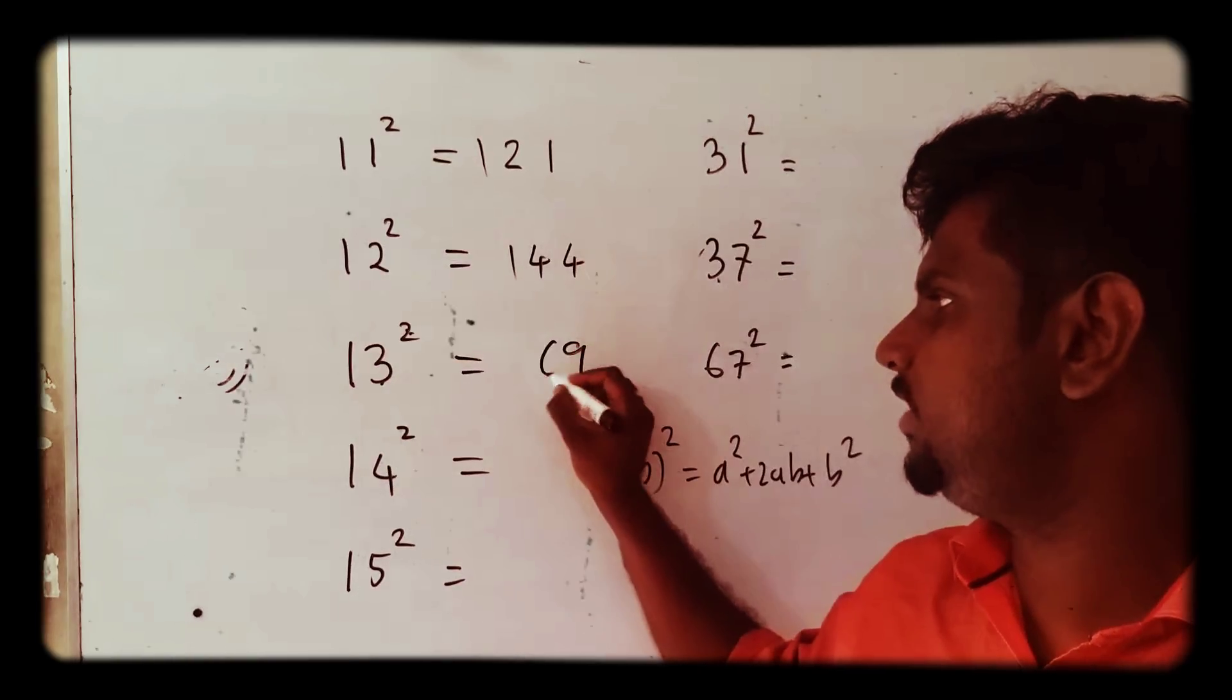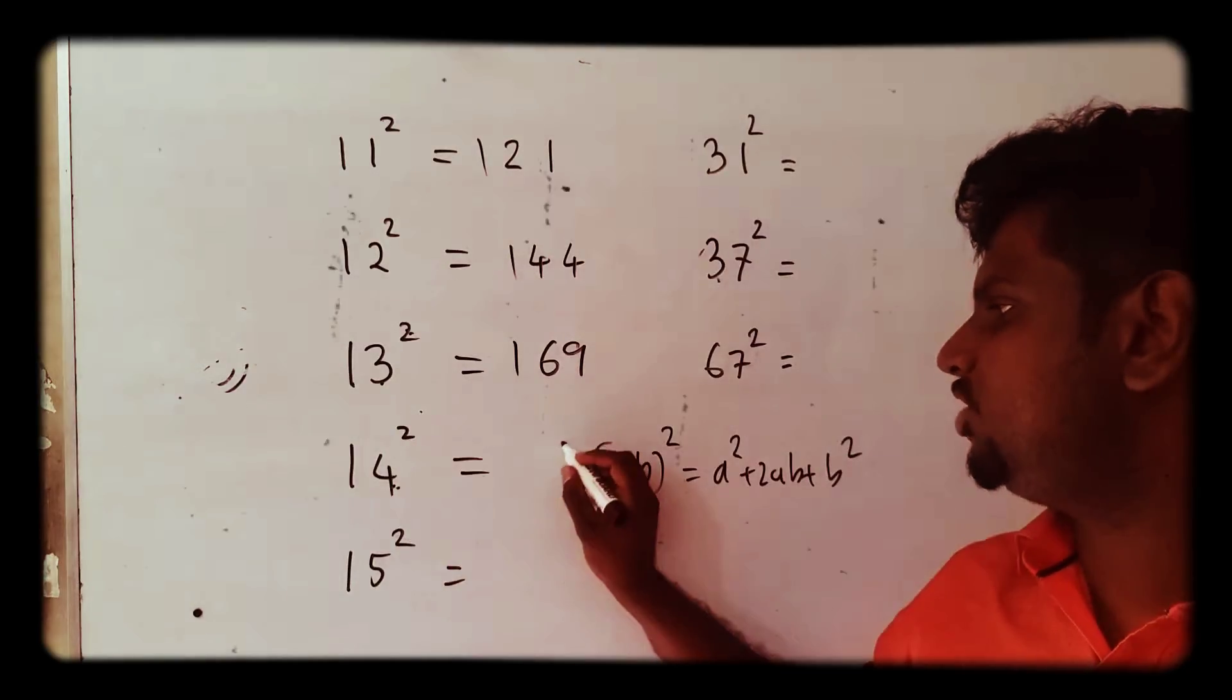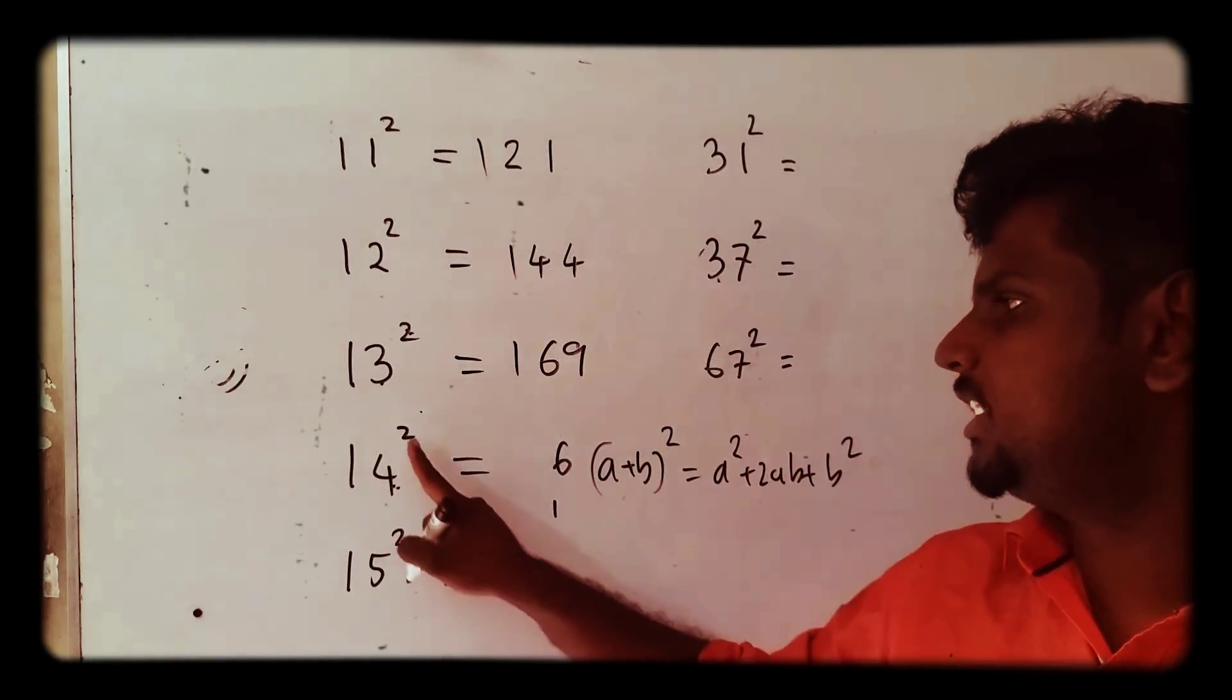14² - 4² = 16, 2 × 1 × 4 = 8, 1² = 1, giving 196.